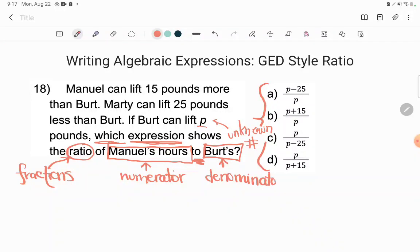Okay, awesome. So let's go find the information we need about Manuel's hours and Burt's hours. If we need Manuel's on the top, let's go find Manuel's first. Here I see Manuel can lift 15 pounds more than Burt. So whatever Burt's is, 15, Manuel, careful. A lot of students just go, oh, 15.